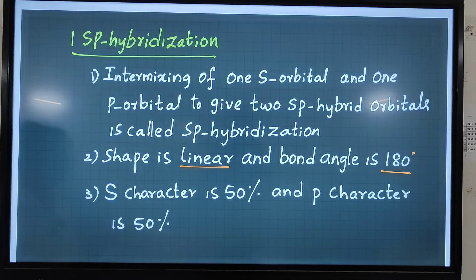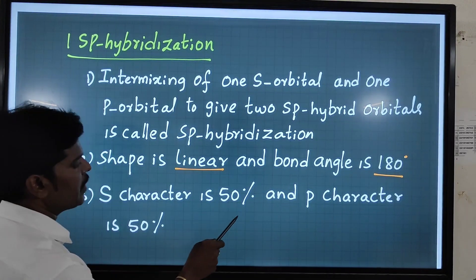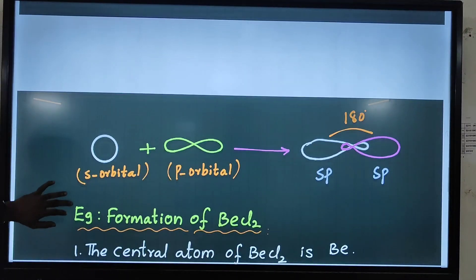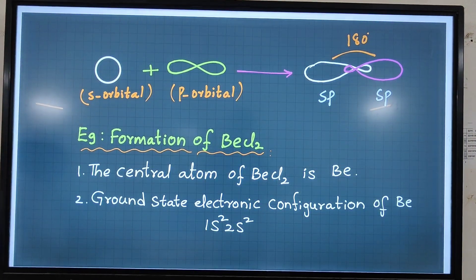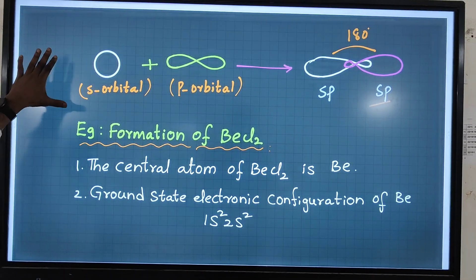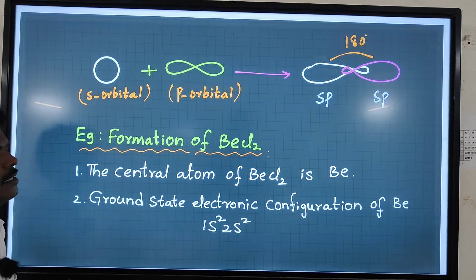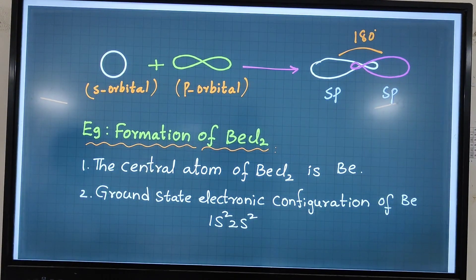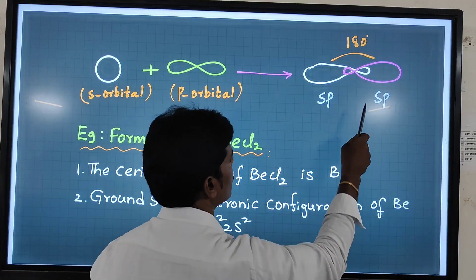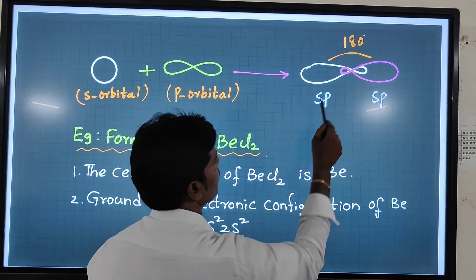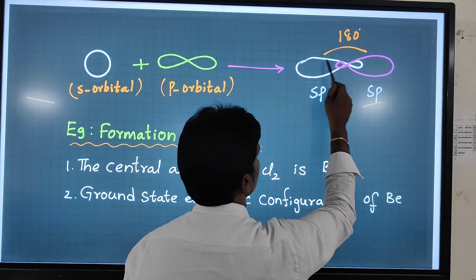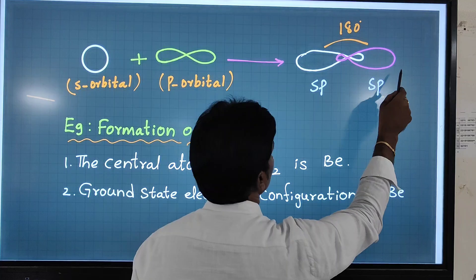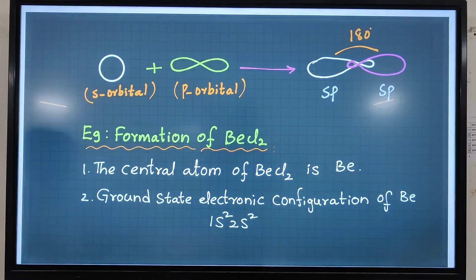In sp hybridization, s character is 50% and p character is 50%. In the orbital diagram, the s orbital has a spherical shape and the p orbital has a dumbbell shape. These two orbitals intermix together in one atom to produce two sp hybrid orbitals — arranged in a linear shape with a bond angle of 180 degrees.